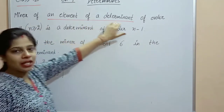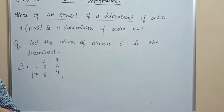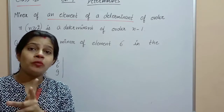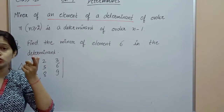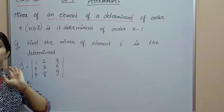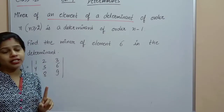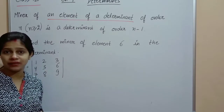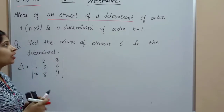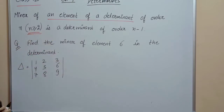When we find the minor of any element for a determinant of order n, its order will be n−1. If n = 1 this condition fails, so we cannot talk about minors when the determinant's order equals 1. The order must be 2 or greater — either 2 or larger.